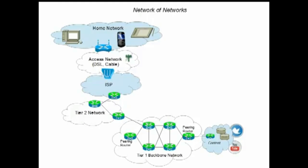Tier 1 and tier 2 networks have connections and peering points where they connect to content providers. Content providers are in hosting centers connected either directly or through a hosting company, and that is where the content resides. Data centers and so-called cloud services are also available in those data centers.